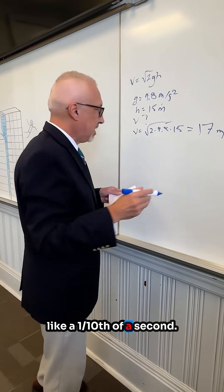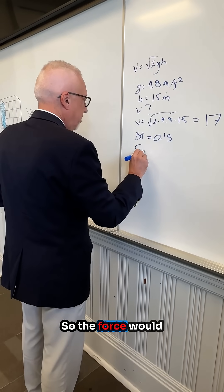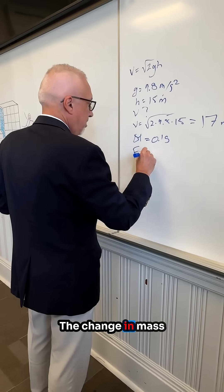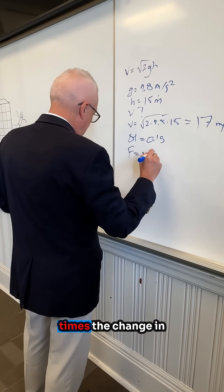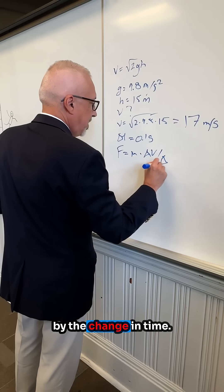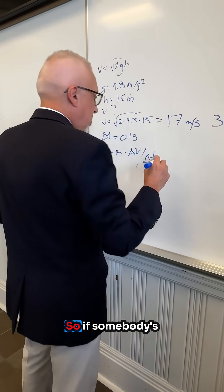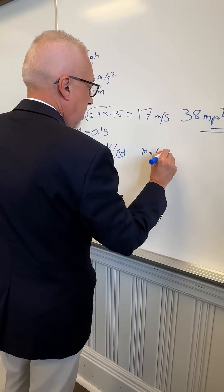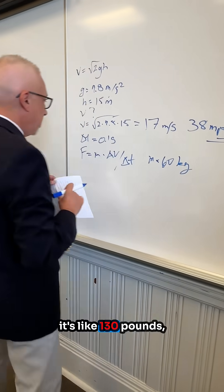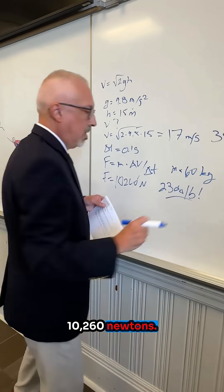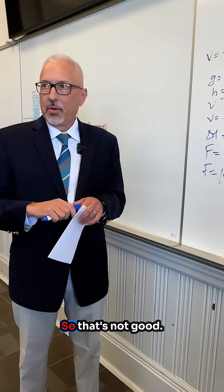Let's say he does it in like a tenth of a second. So the force would be mass times the change in velocity divided by the change in time. So if somebody's 60 kilograms or so, it's like 130 pounds, that's 10,260 newtons. So like two tons. So that's not good.